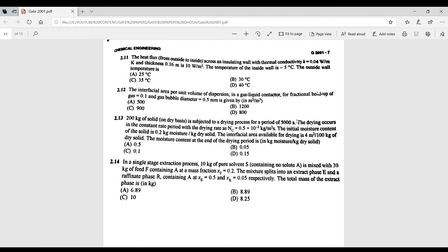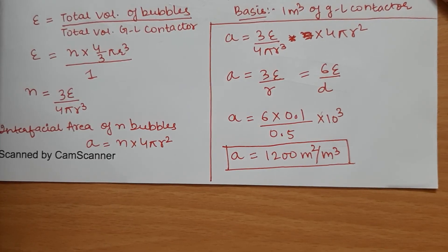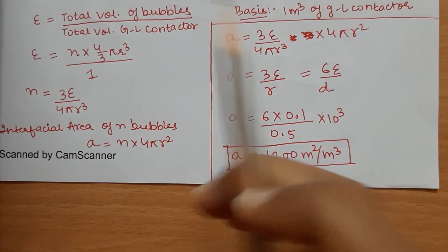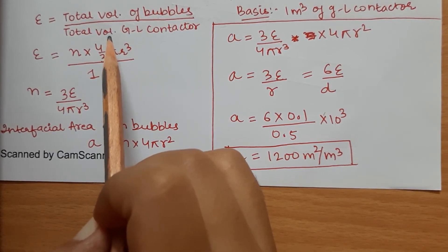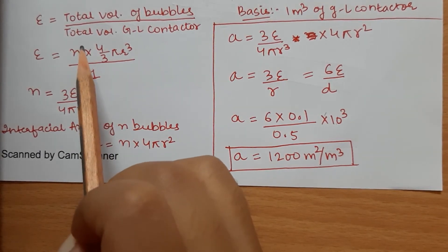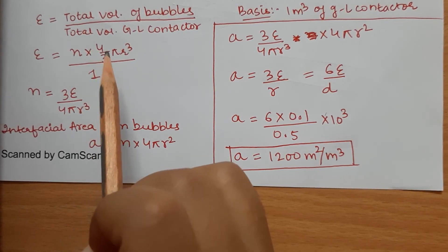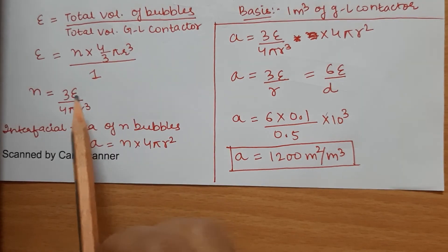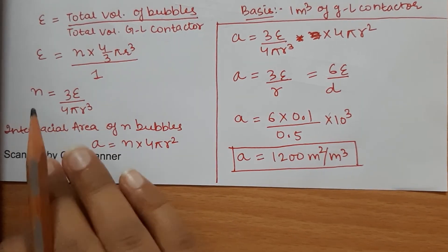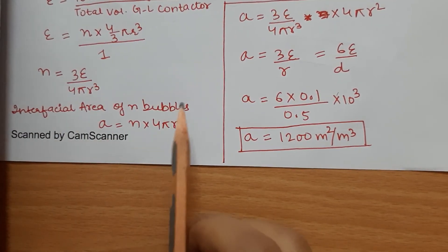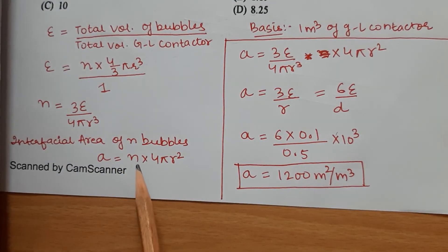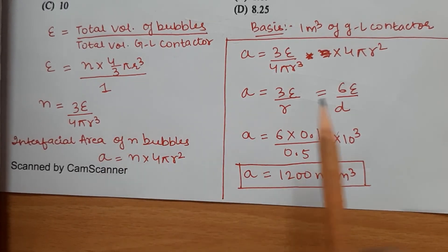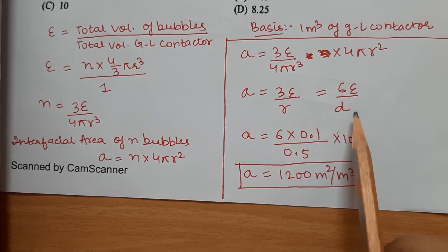Question 2.12: find the interfacial area per unit volume of dispersion in a gas-liquid contactor. Taking a basis of 1 m³ of contactor, ε (gas holdup) equals the total volume of bubbles divided by the total volume of the contactor. The total volume of bubbles is n·(4/3)πr³, where n is the number of bubbles. Therefore n = 3ε/(4πr³).